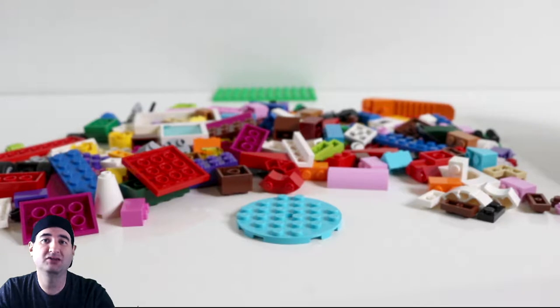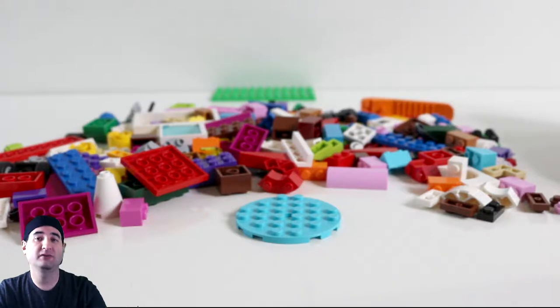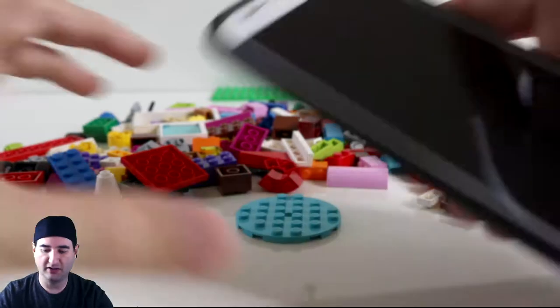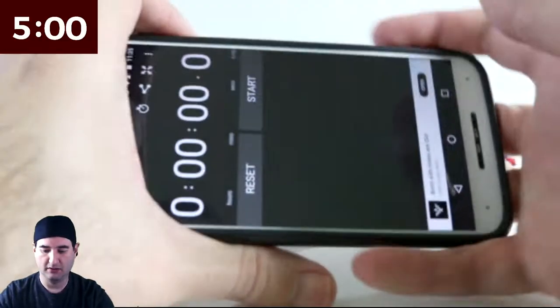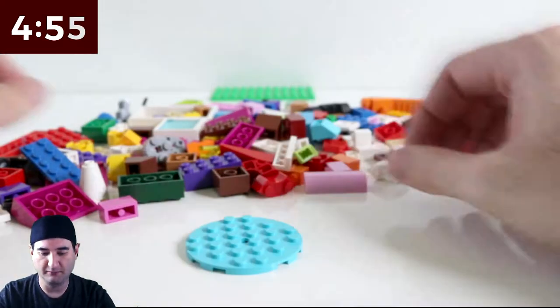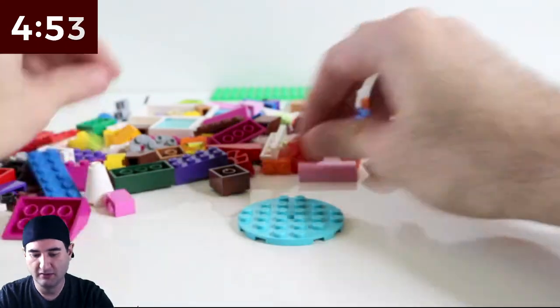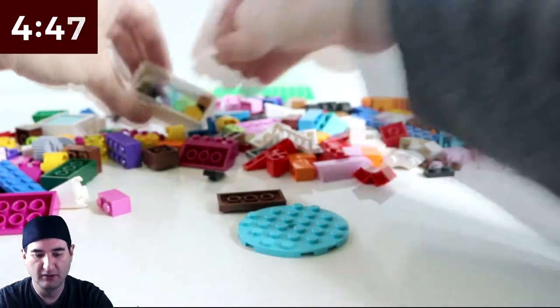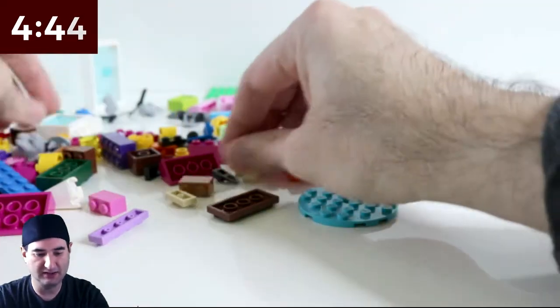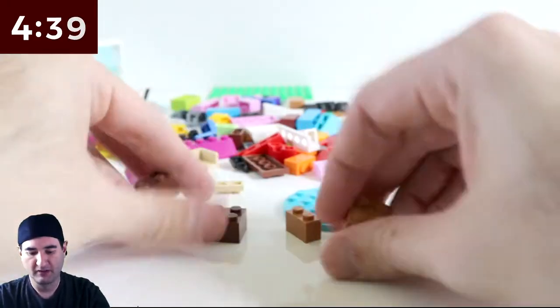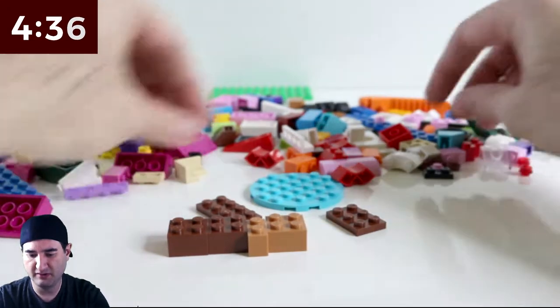So today we're gonna build a cookie or assortment of cookies. I'm not sure. We did candies for Halloween, so why don't we do some cookies for Christmas? Let's put five minutes on the clock. We're gonna do five minutes on the clock. We already got something right here. I'm thinking chocolate chip cookie would be really cool. I did not sort the colors today, I just poured it out.